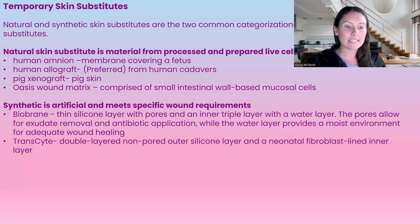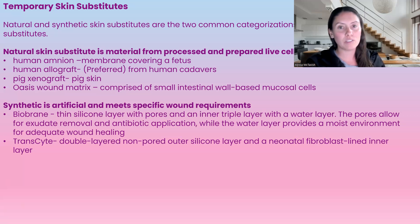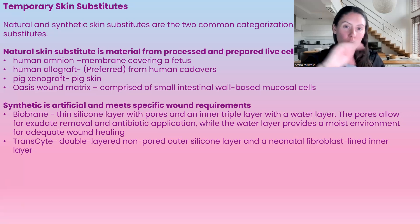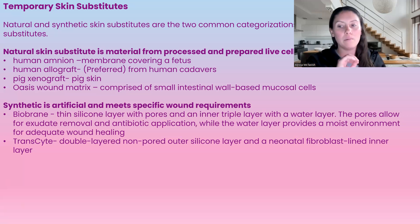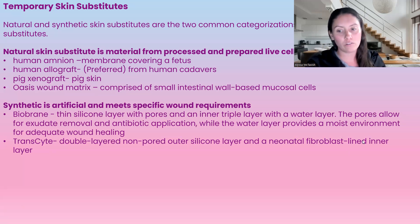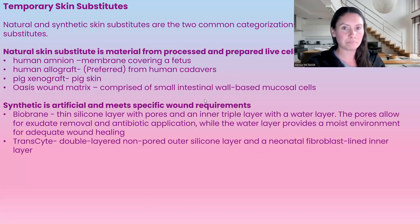Then we have Transite. This is a double-layered product with a non-porous outer silicone layer, and the inner layer is lined with a neonatal fibroblast.